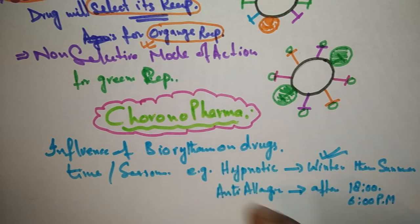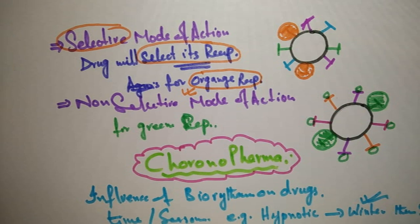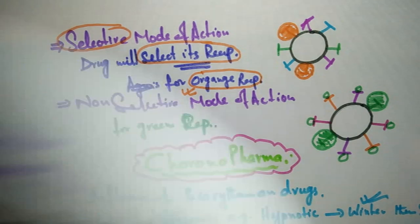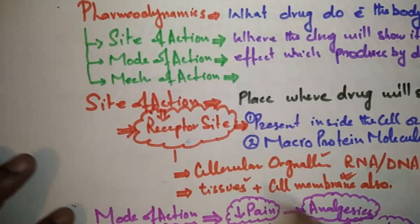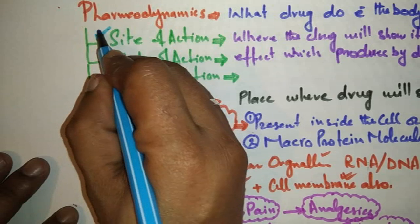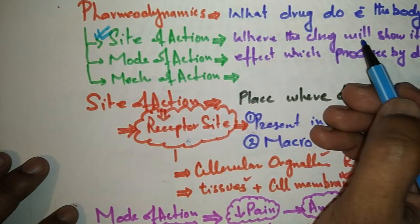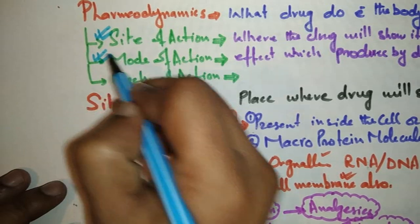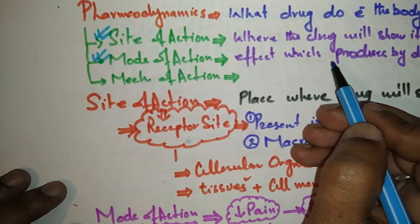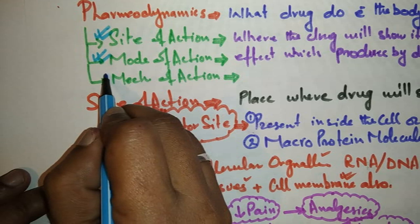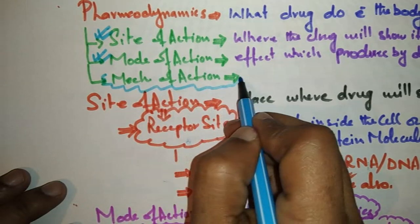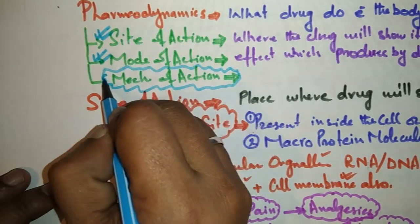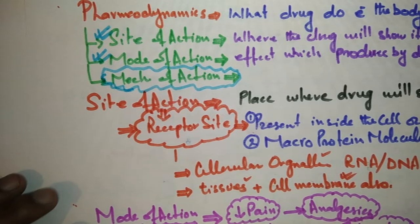This study is known as chronopharmacology. So till here we looked at site of action — the place where the drug has to show its effect — and mode of action, the effect produced by a drug. The last thing remaining is mechanism of action.